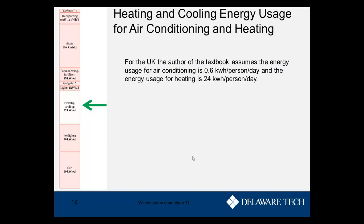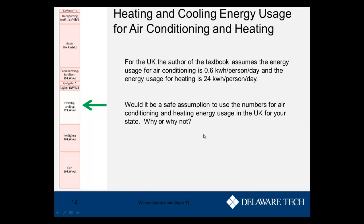Now let's look at heating or cooling our homes, businesses, and offices. For the United Kingdom, the author assumes air conditioning energy usage is 0.6 kilowatt hours per person per day, and heating energy usage is 24 kilowatt hours per person per day. These numbers depend on climate, so unless your state's climate is very similar to the UK's, you probably can't use them directly. For example, if you live in Phoenix, Arizona, your cooling energy use will be very high and heating very low, so using the UK numbers wouldn't be appropriate.